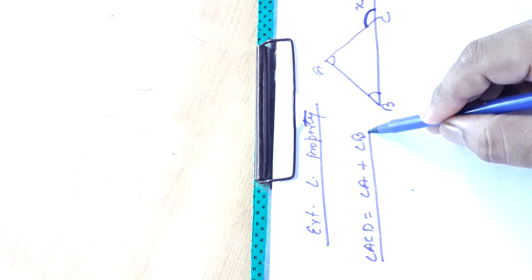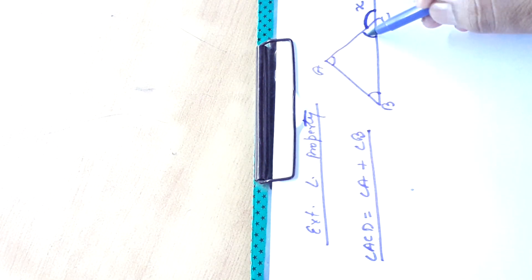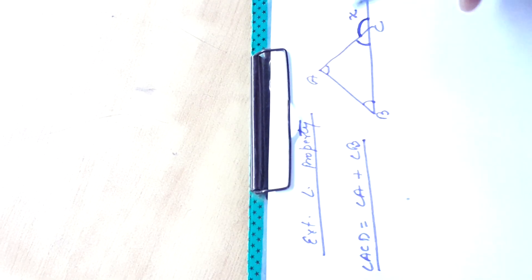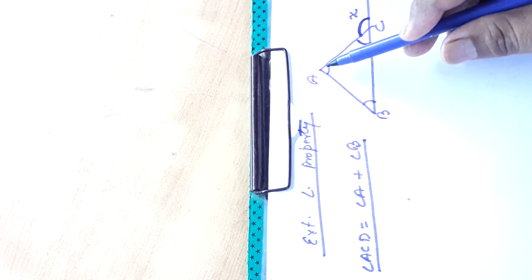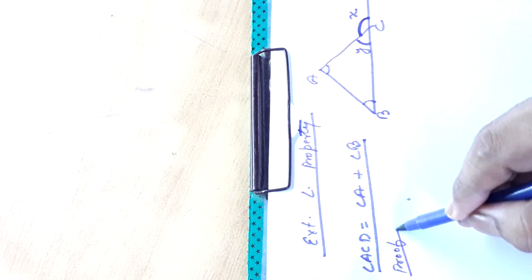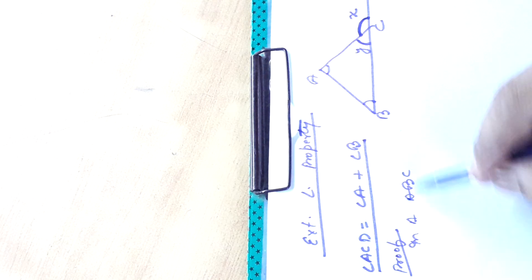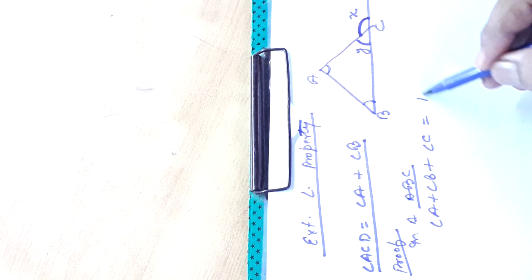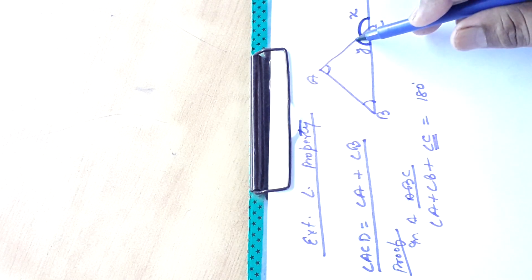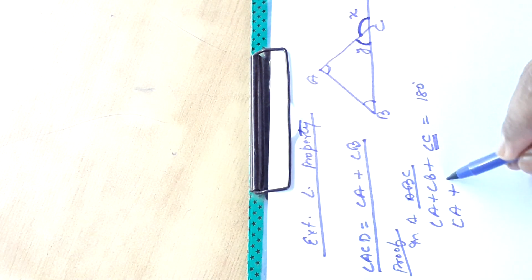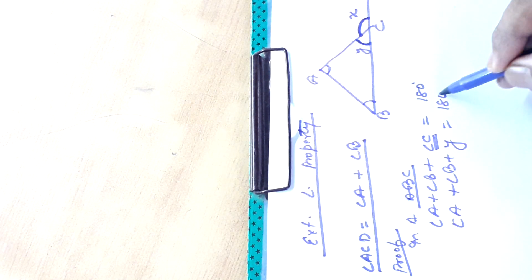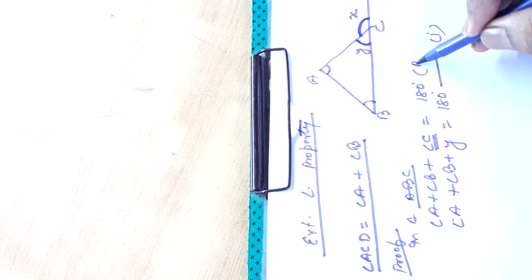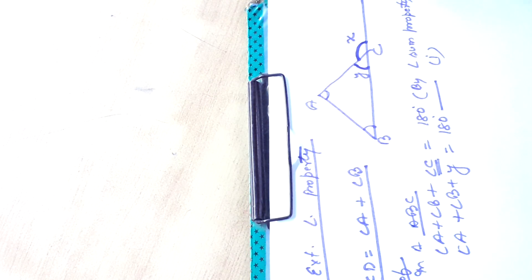Now we will prove this. Suppose we name this angle as y. In triangle ABC, angle A plus angle B plus angle C equals 180 degrees. We can write y here because I have taken angle C as y. So angle A plus angle B plus y is equal to 180 degrees. Let this be equation 1. This is by the angle sum property of a triangle.